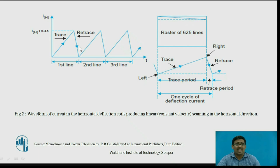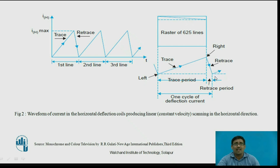This diagram shows the raster of 625 lines. For interlaced scanning we require a minimum of 625 lines, explained with this diagram. The scanning starts from the left-hand side, reaches IMAX, then suddenly drops to 0 and starts again. This rising portion is called the trace and the falling portion is called the retrace.